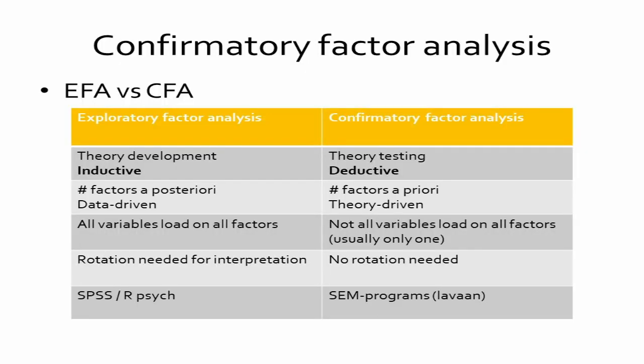Let me emphasize the distinctions between EFA and CFA. We do EFA when we're doing an inductive approach to theory development. For example, we've administered items related to morality but don't yet have a theory about its structure. EFA can help us decide how many distinct components are present in the data. In EFA the number of factors is often determined a posteriori — we compare solutions with different numbers of factors, using tools such as parallel analysis to decide the optimal number. This is a data-driven approach.